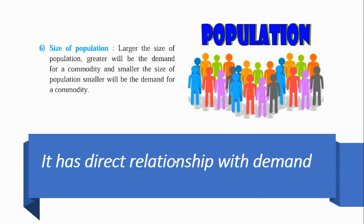The sixth determinant is the size of population. India is a country with a growing population. The larger the population, the greater the demand — this shows a direct relationship. More population means more demand for commodities in the market. So as population increases, demand also increases — a direct relationship with the demand for products.